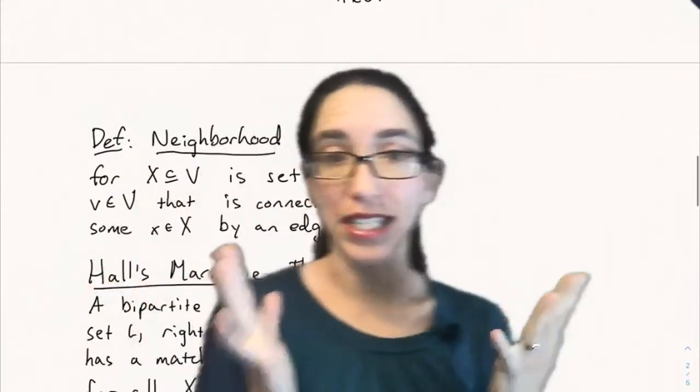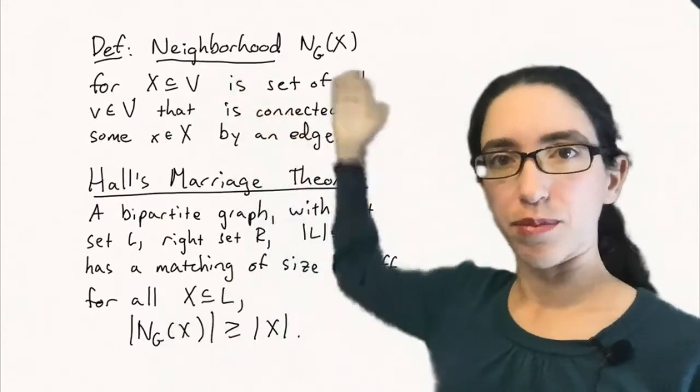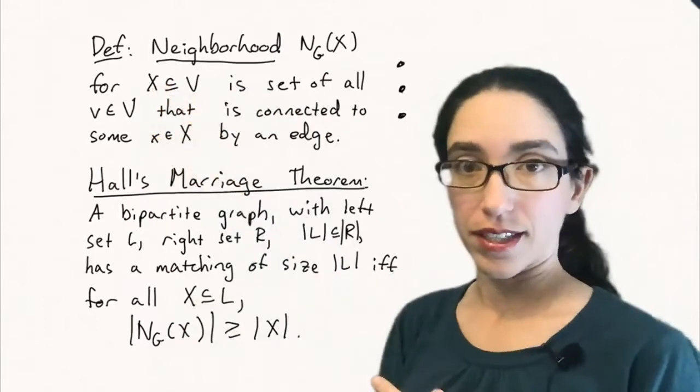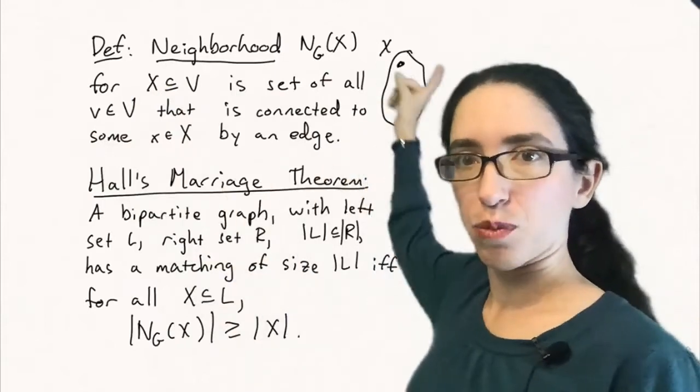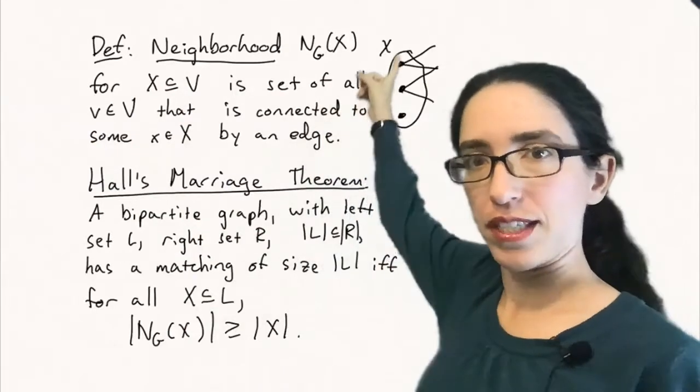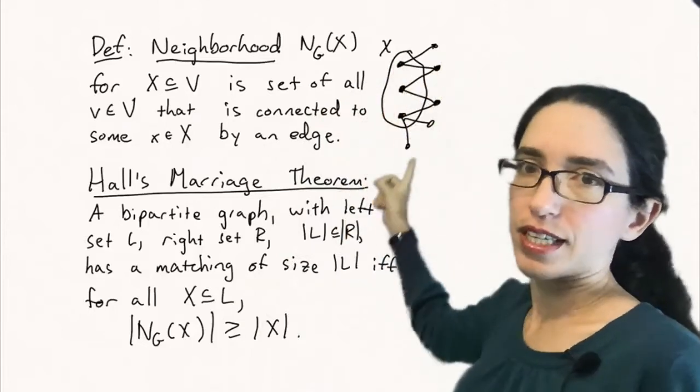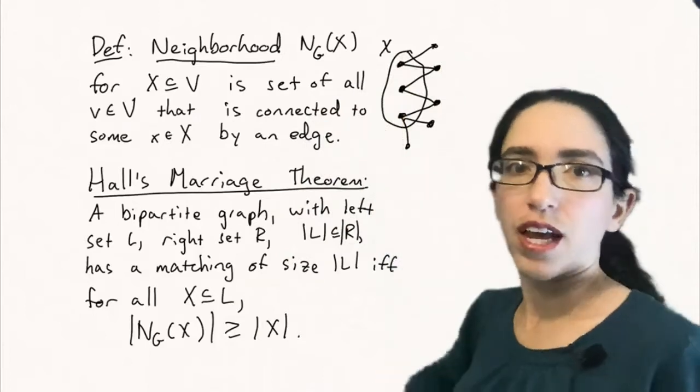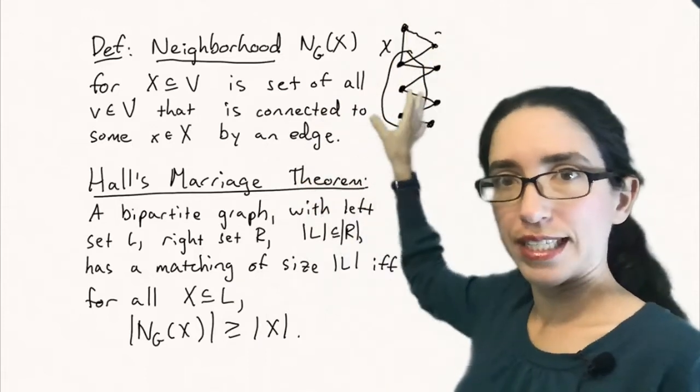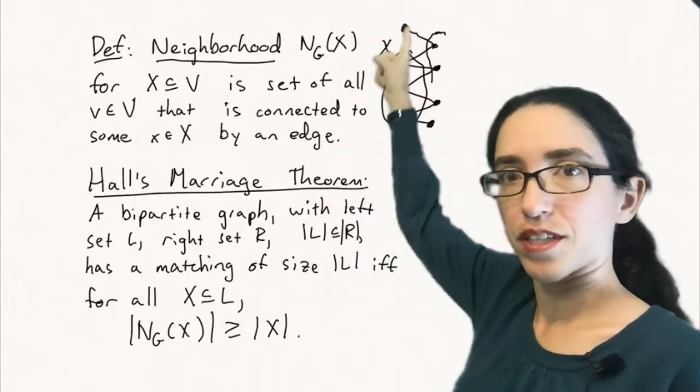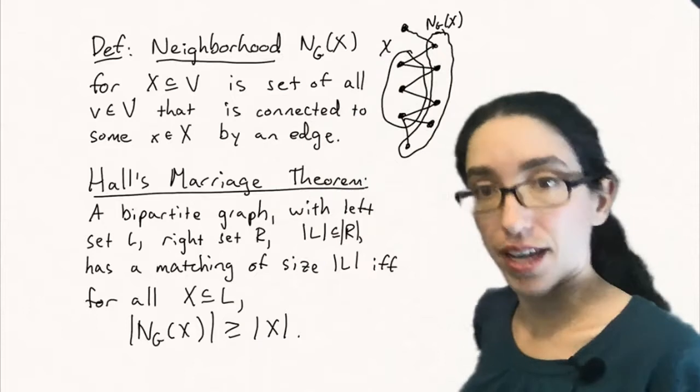So Hall's marriage theorem tells us exactly when we can do this. Here's how we state Hall's marriage theorem. We first need to define the neighborhood of a subset of a graph. When you have a subset of vertices in the graph, so you have an X that is just a set of vertices, and the vertices in X might be connected to some other vertices here. The neighborhood of X is defined to be the set of all vertices that are adjacent by an edge to some element of X. So if they're connected to X by an edge, they're in the neighborhood. This one is not in the neighborhood because it's not connected directly by an edge to a point of X. But all these other vertices that I drew are in the neighborhood of X.